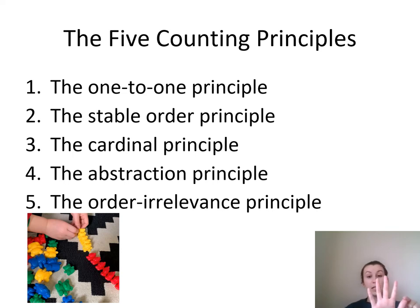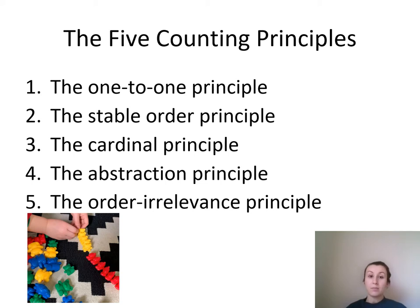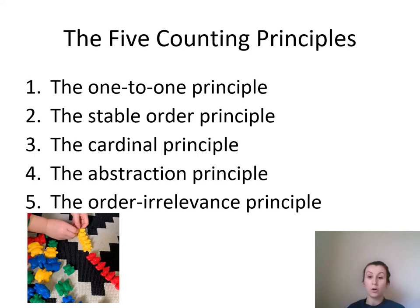Each object which they touch has only one number. Sometimes a child may miss out an object that needs counting, which can lead to inaccurate counting. So it's really important that your child counts each one and touches each one which they can see. To support them with this, we encourage them to line up the objects as they are counting, which supports their one-to-one correspondence.